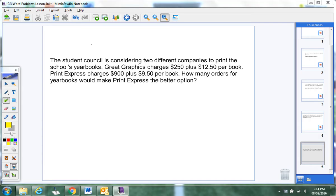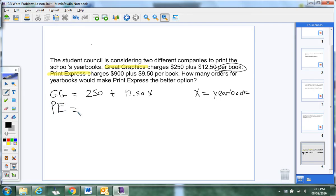So we need to look at this equation in terms of inequality. We have Great Graphics is our first equation we're going to look at, and then we have Print Express. So Great Graphics, we'll use GG. Their equation is $250, is the set amount, plus $12.50X. What does X signify? Per book. So we come out of Print Express. So PE. This equation is $900 plus $9.50X.